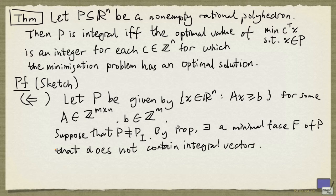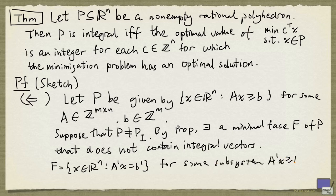Since f is a minimal face, f is an affine subspace given by the following: the set of x in R^n satisfying A' x equals b' for some subsystem A' x greater than or equal to b' of the system defining p. Because f does not contain integral vectors, this system has no integral solutions.